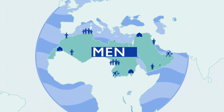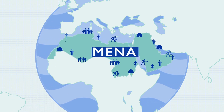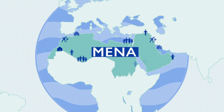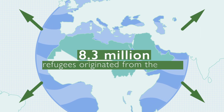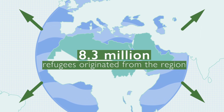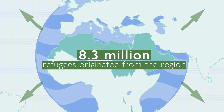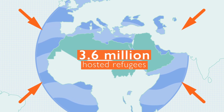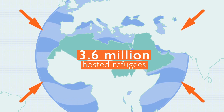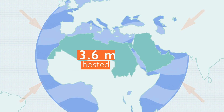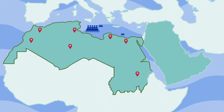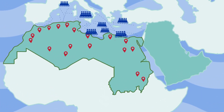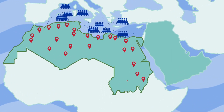Conversely, the MENA region plays a key role in the global refugee crisis, where more than 8.3 million refugees are originating from the MENA region, and 3.6 million refugees are hosted by the MENA region.